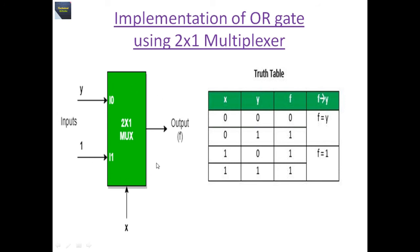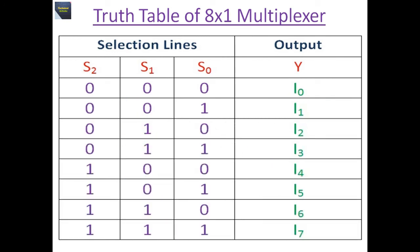Now let's talk about the 8x1 multiplexer. We require two 4x1 multiplexers in the first stage to handle 8 data inputs. Since each 4x1 multiplexer produces one output, we require a 2x1 multiplexer in the second stage to produce the final output. The truth table for the 8x1 multiplexer has three selection lines s2, s1, s0. When the combination is 0 0 0, output is i0; when 0 0 1, output is i1, and so on up to i7.